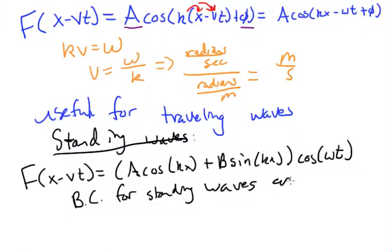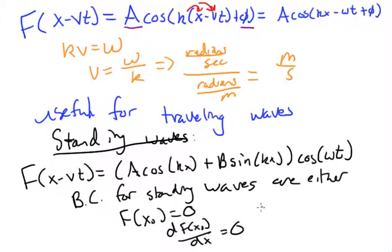Waves are either f of x equal to 0 or df/dx of 0 equal to 0. So for either of these cases, the above simplifies to f of x equals A cosine kx plus B sine kx, because you don't care about the time dependence for a standing wave. A standing wave just lets it oscillate in time. All right, so we've gone over two solutions.